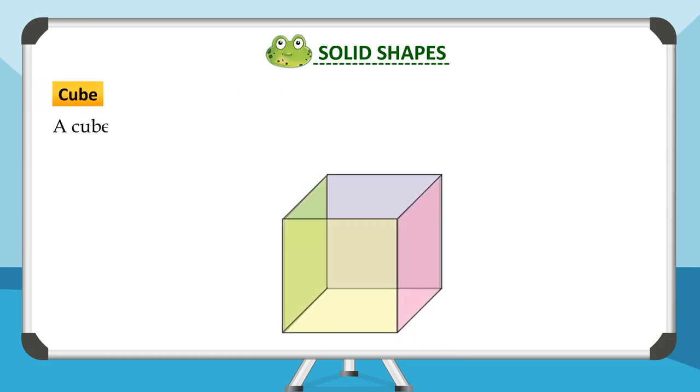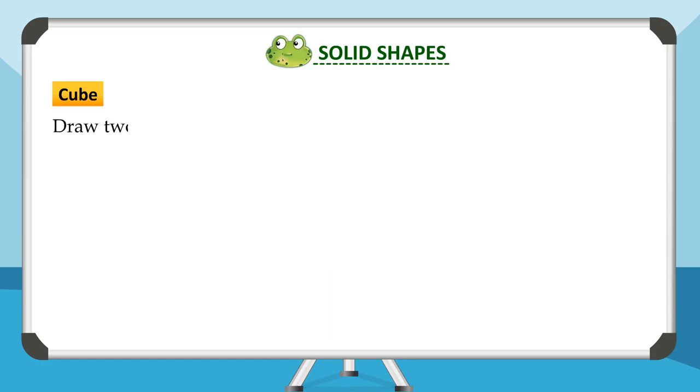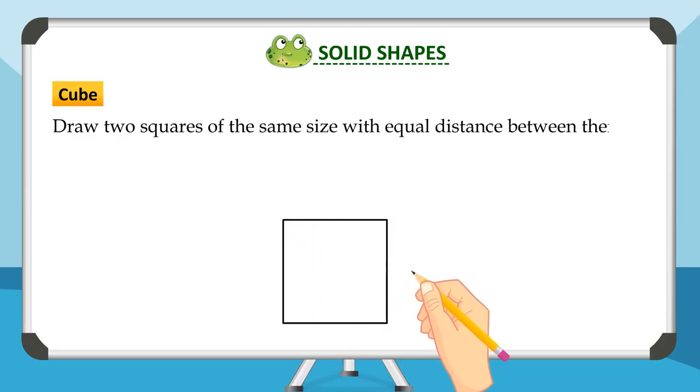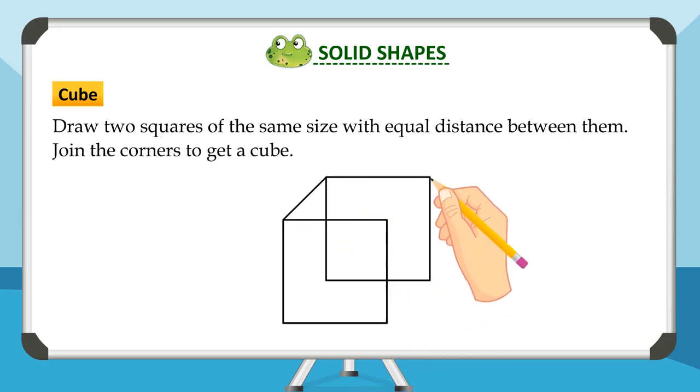A cube has 6 faces, 8 corners, and 12 edges. All the faces of a cube are square and are of the same size. Draw two squares of the same size with equal distance between them, then join the corners to get a cube.